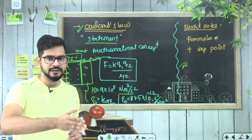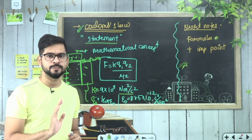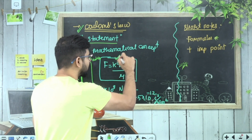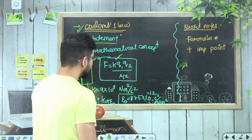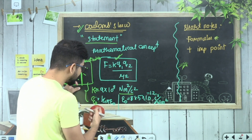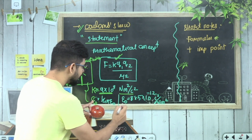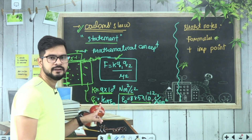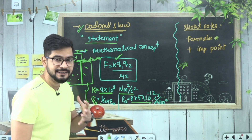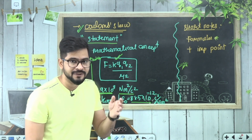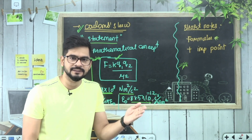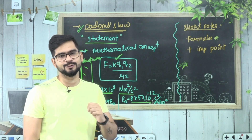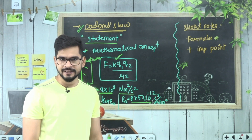Side mein pencil se line kheench dijiye aur short note mein kya banayein - yahaan se sirf formula uthayiye, phir k ki value, iska unit, epsilon naught ye - dheere dheere topic wise - aapko pata chalta jayega ki short notes mein banana kya hota hai.